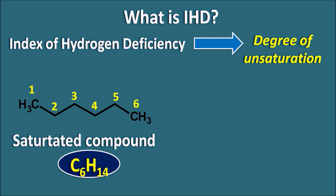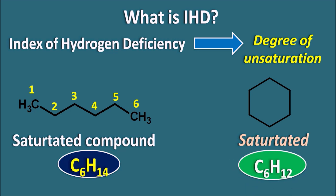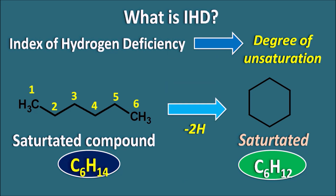We cannot observe any double bond in this saturated compound. Now let us take cyclohexane — a cycloalkane that is saturated, meaning it has no double bonds. The molecular formula of cyclohexane is C6H12. When converting the saturated open-chain compound to a cyclic compound, both having 6 carbons, two hydrogens are lost during the cyclization process.